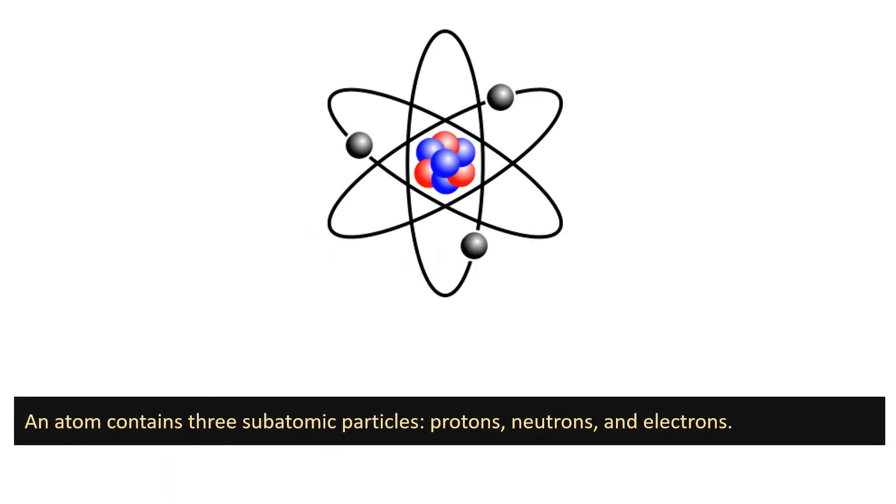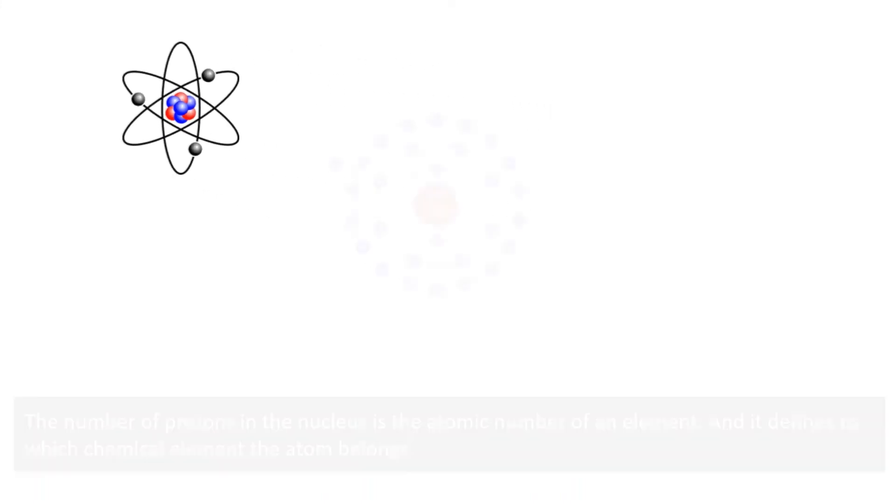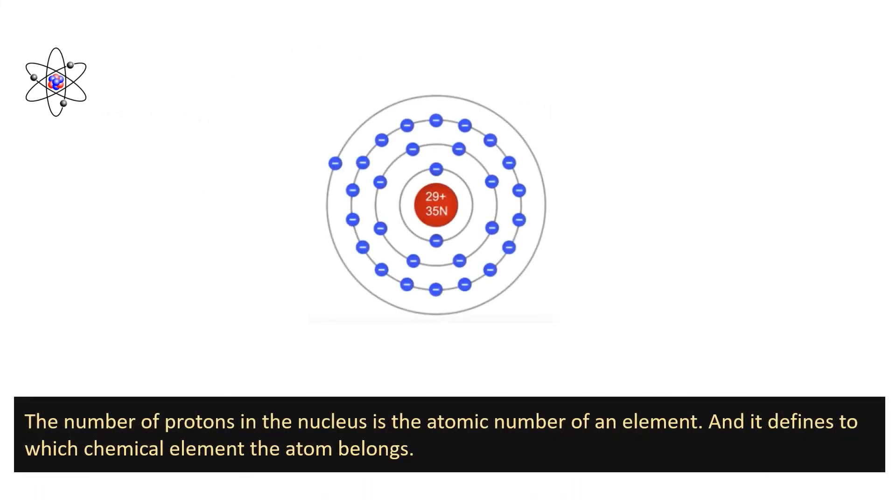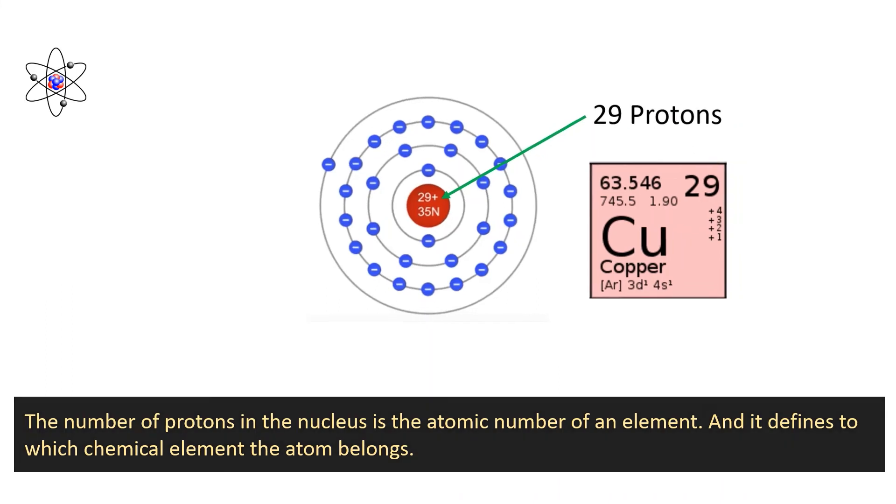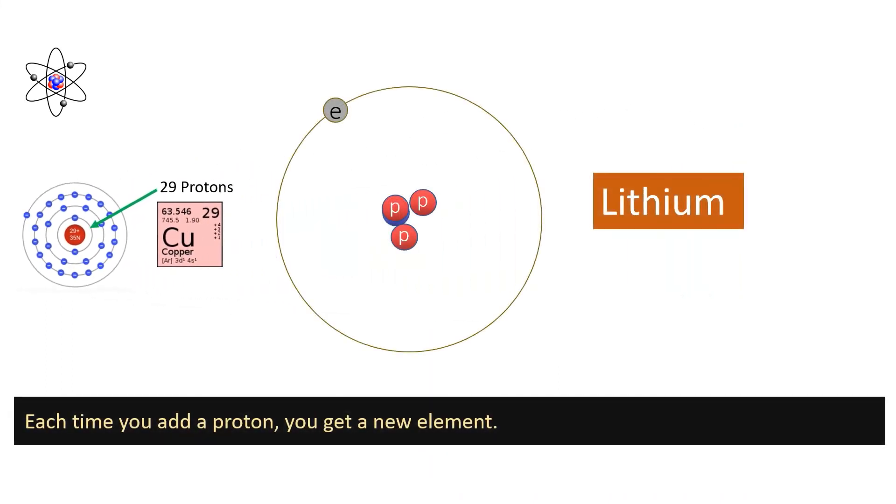An atom contains three subatomic particles: protons, neutrons and electrons. The number of protons in the nucleus is defined as the atomic number of an element, and it also defines to which chemical element the atom belongs to. Each time you add a proton, you get a new element.